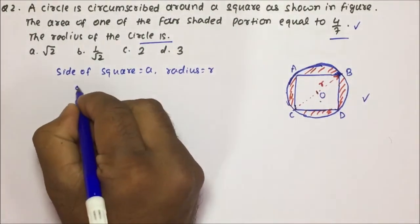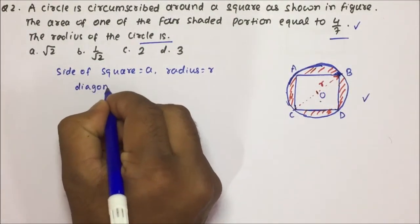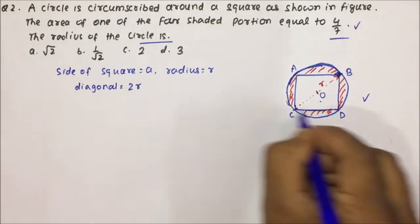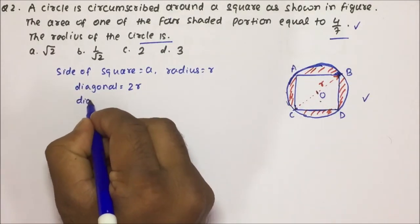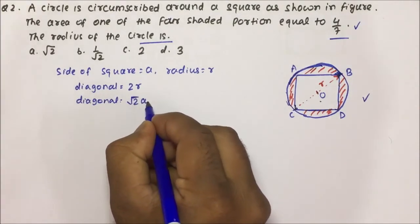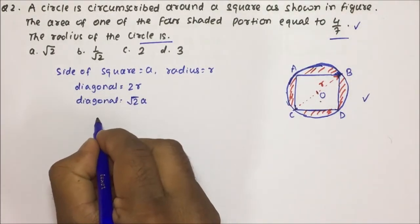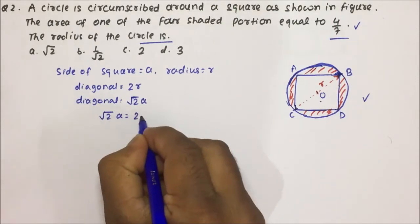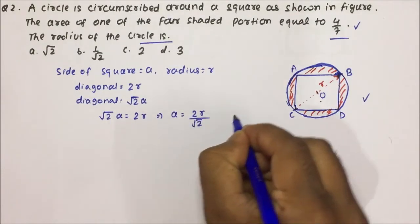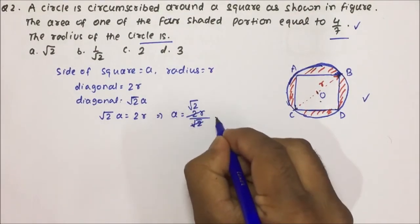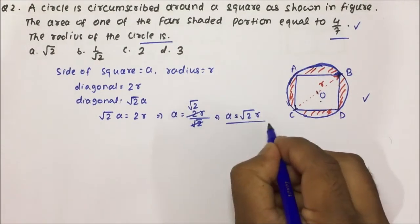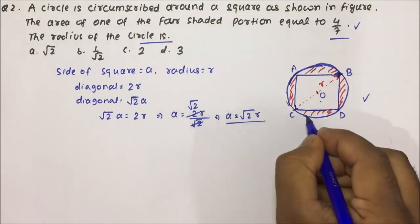Since the diagonal of the square equals 2R, and the diagonal of a square is also √2 times the side A, we can write √2 · A = 2R. Therefore A = 2R / √2, which simplifies to A = √2 · R. So we have the relation between the side A and radius R of the circumscribed circle.